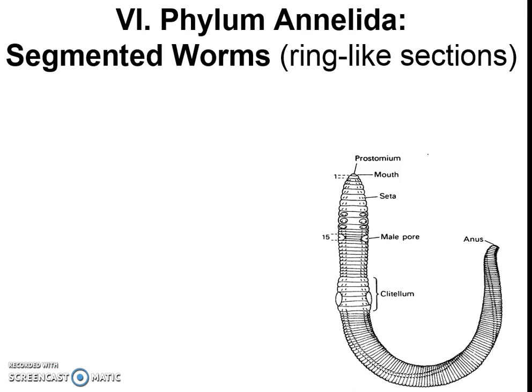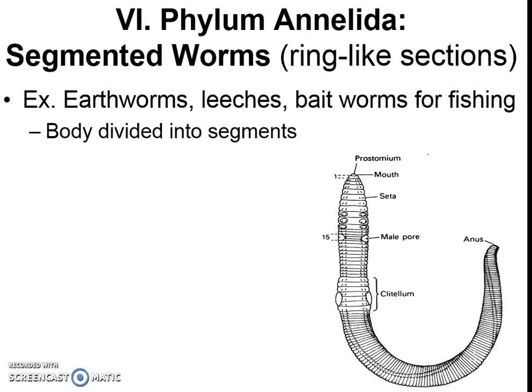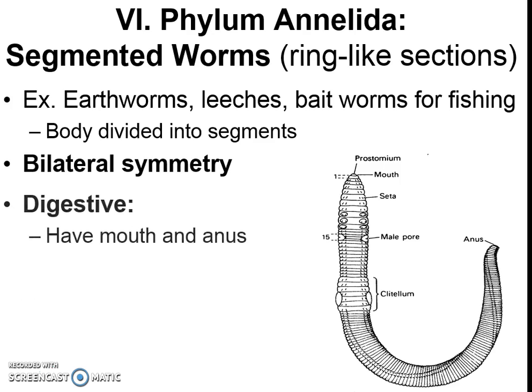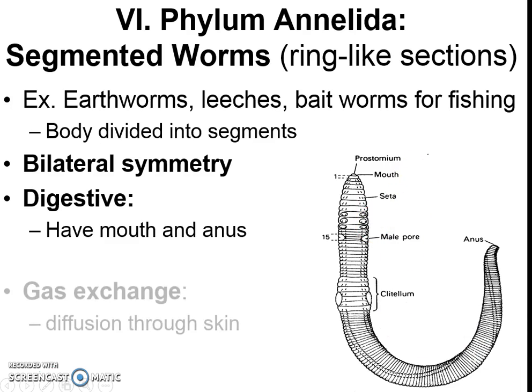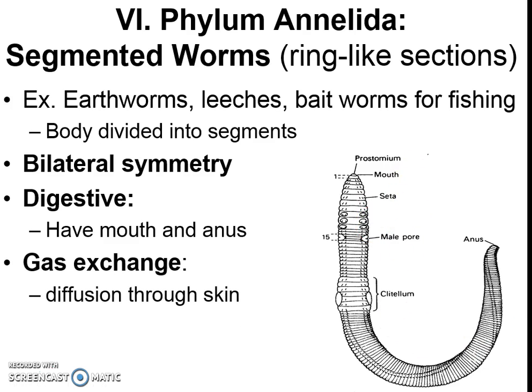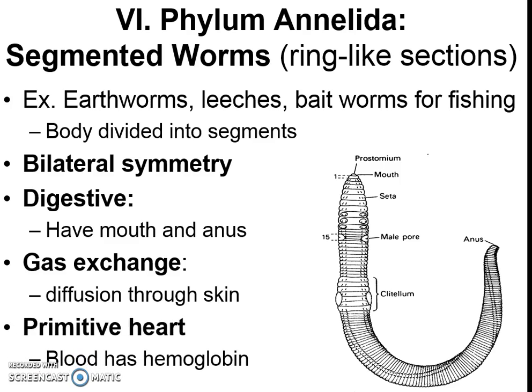Now we're at regular segmented worms — the annelids. We know that if we pull a worm out of the ground, it has different ring-like segments. Other things in this category are leeches used as bait for fishing. They all have bodies that are divided, which is more complicated for the skin and muscular systems. They have bilateral symmetry. Their digestive system is a little more complex, again with separate mouth and anus. What's really cool and new here is a primitive heart, and the blood has hemoglobin to move oxygen more effectively.